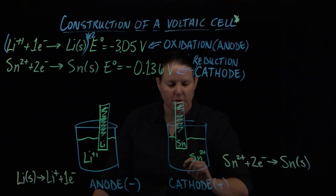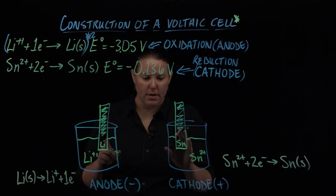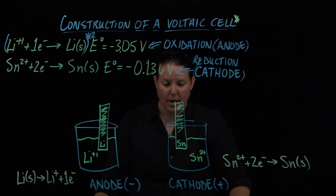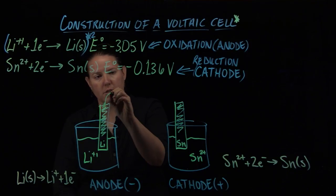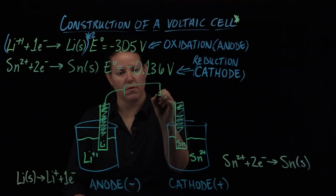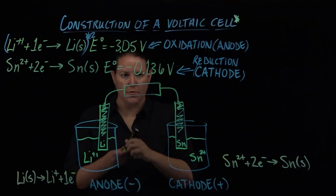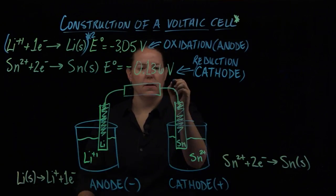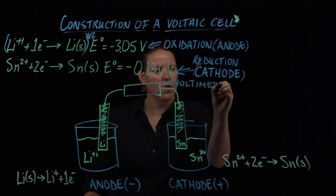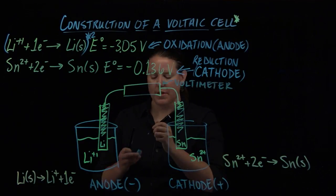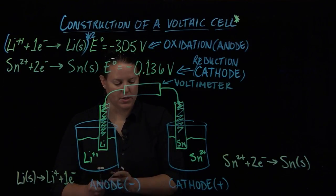And then we know we have tin over here. Tin is pretty cheap, lithium is cheapish. I'm going to align my electrodes and my ion solutions just like that. I'm going to connect these two and I'm going to connect them through a voltmeter.